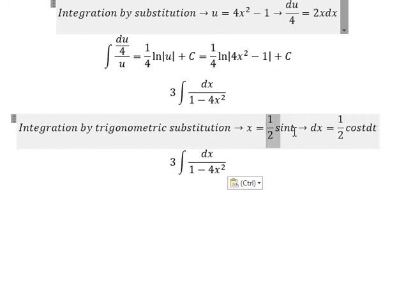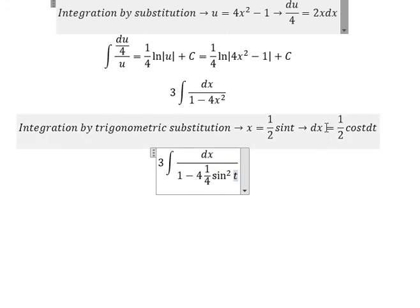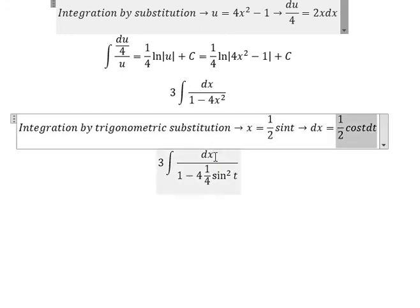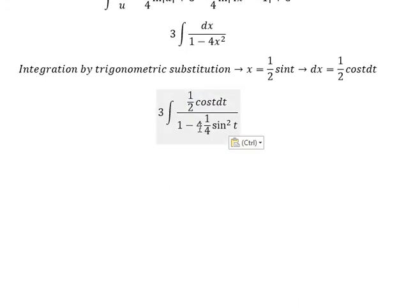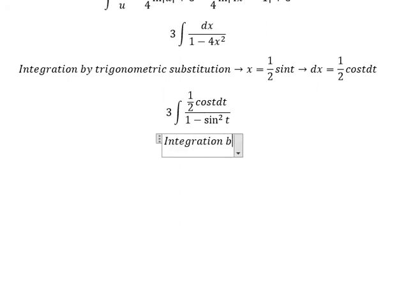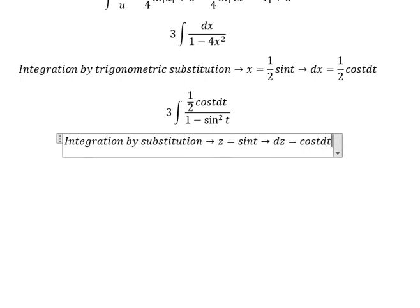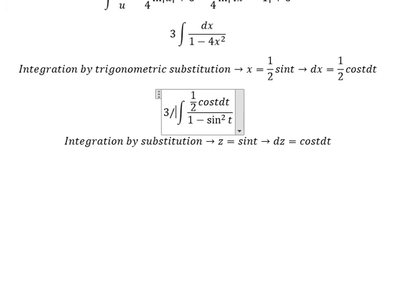We substitute into the expression. You get 1 over 4 times sin²(t) for one part, and after substituting dx you get 1 for this factor. Next, we can use another iteration by substitution. We put z equal to sin(t), so dz equals cos(t) dt. So we have 3 over 2 in here.